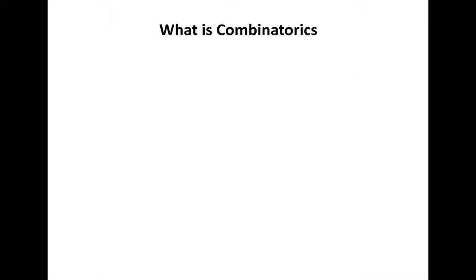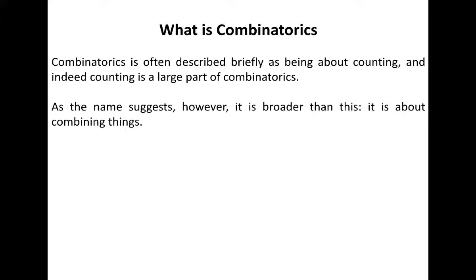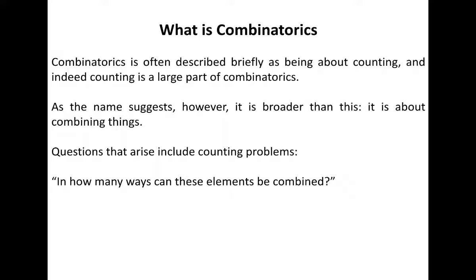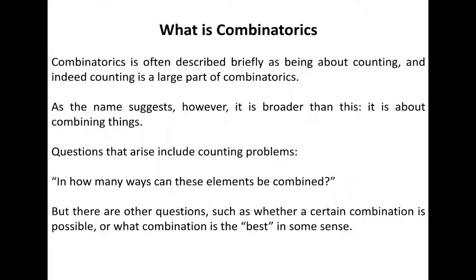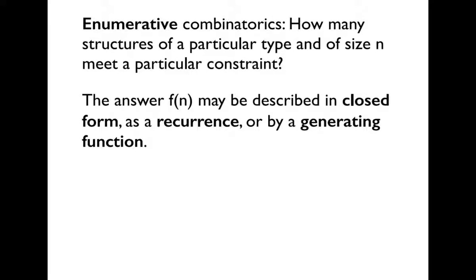So what is combinatorics? There is an impression that combinatorics is simply about counting, but counting is just one part of combinatorics. Combinatorics is mainly about combining things. There could be many counting problems — one standard question is how many ways elements can be combined, or which is the best combination among all possible combinations. There may be many ways to answer a combinatorics problem, including closed form via recurrence relations or generating functions.